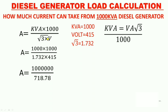Now if we solve this formula: solving the denominator, 1.732 × 415 = 718.78. Solving the full expression, ampere = 1,000,000 / 718.78 = 1391 ampere. So, if we have a 1000 kVA diesel generator, the full load current is 1391 ampere.